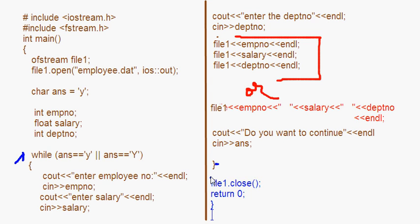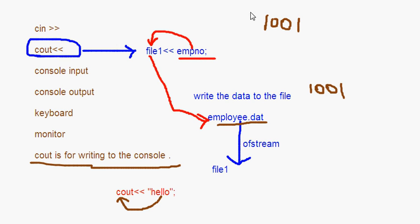The program is not a lengthy one — it's a very small program with very few lines of code. The important thing to understand is how to write variables' values into the file. I have tried to make this clear by comparing it with cin and cout, which are the normal things you have been using. The same way, instead of cout, now it is file1. File1 is the output stream.